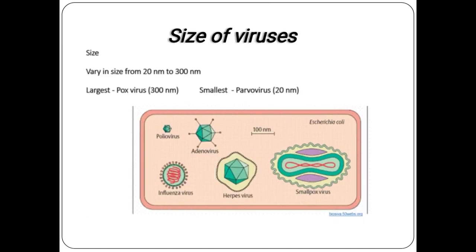Size of viruses: the size of a virus varies from 20 nanometres to 300 nanometres. The largest virus is poxvirus, ranging up to 300 nanometres. The smallest virus is parvovirus, ranging from 20 nanometres.